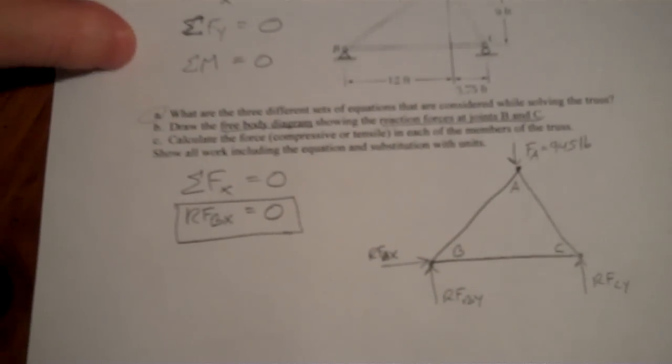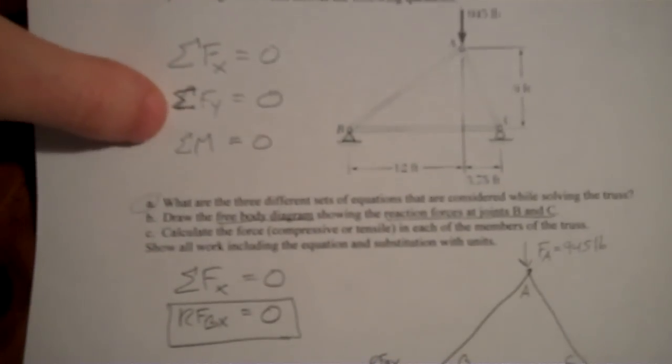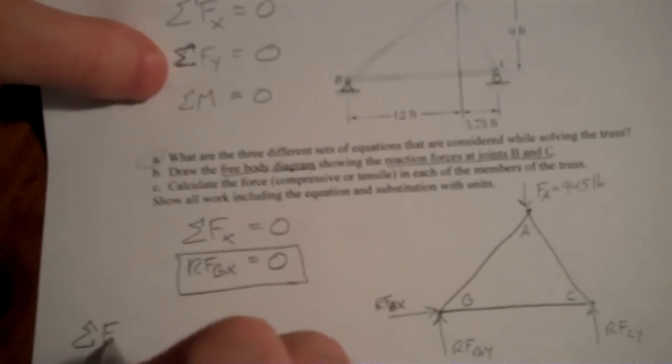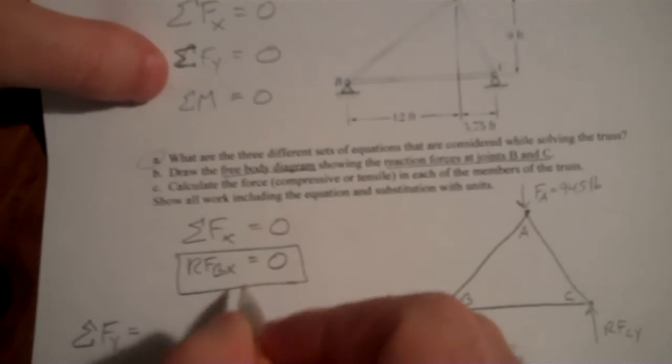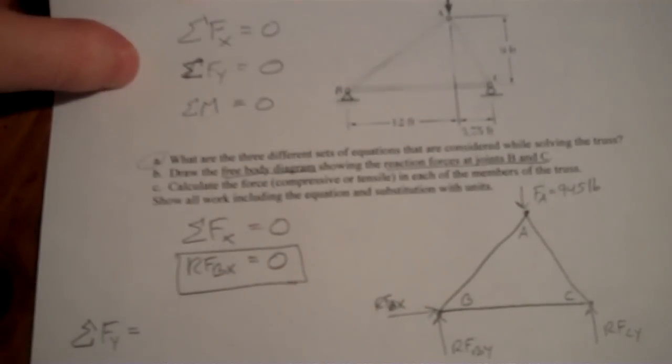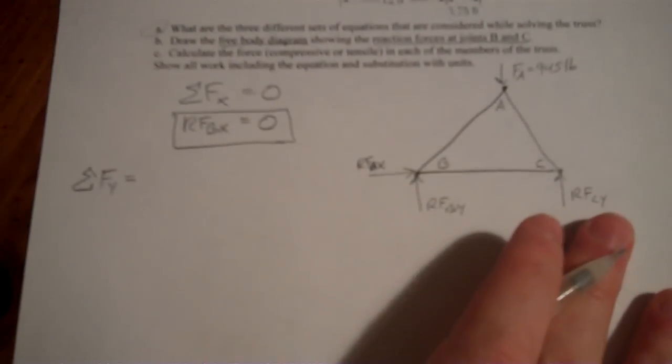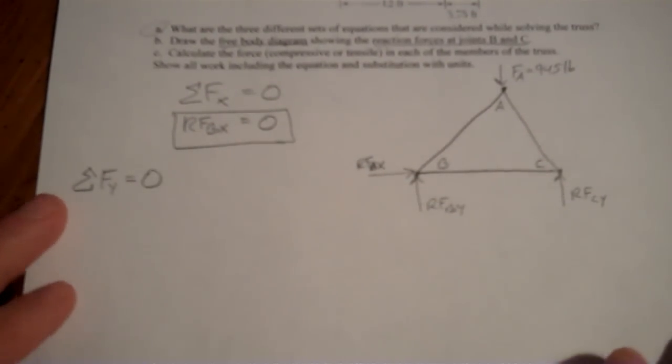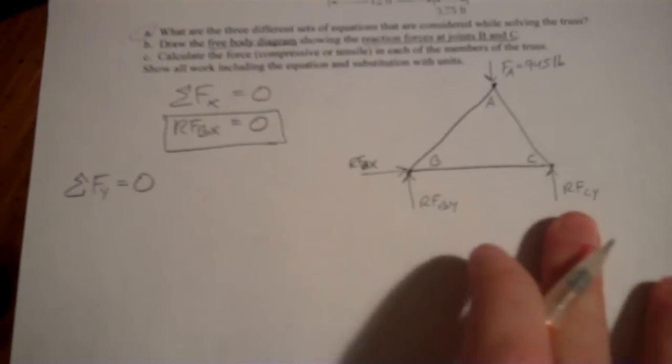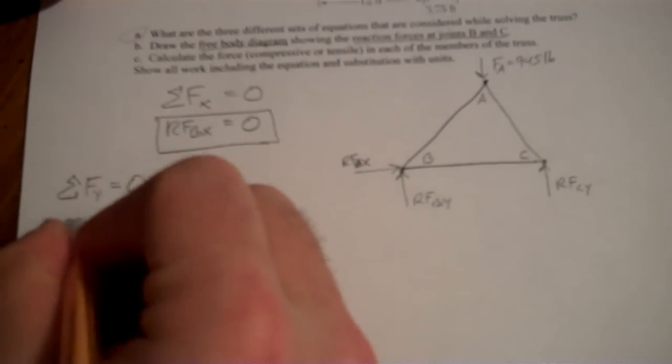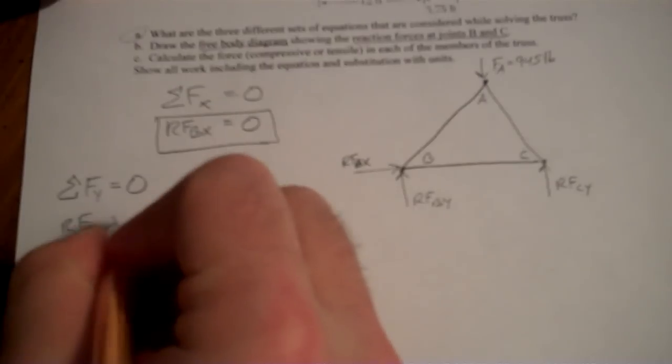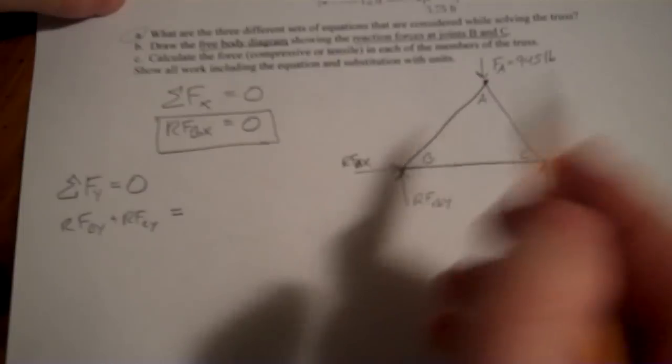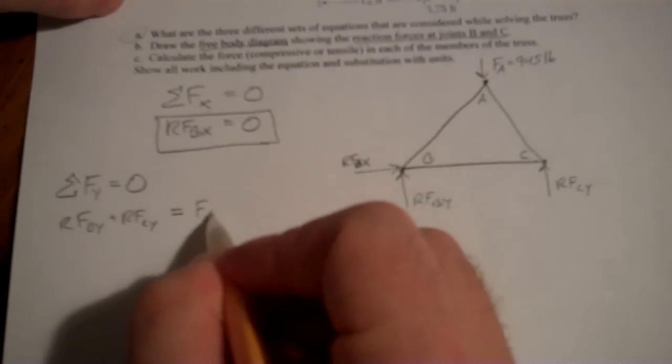So now we've used sum of the forces in the X. Now we go to sum of the forces in the Y. It doesn't really matter in what order you do these in. I just happen to go X, Y, and moment any time I do them. So sum of the forces in the Y that we have, just have to add up to zero. We have RF,B,Y, RF,C,Y going upwards. So RF,B,Y plus RF,C,Y has to be equal to F,A coming down. So that's F,A.